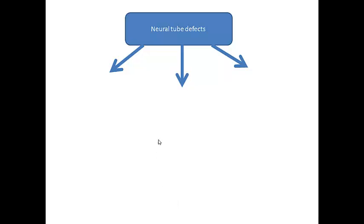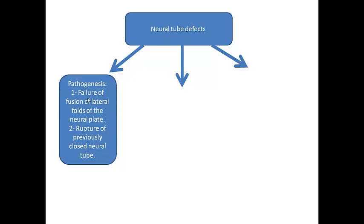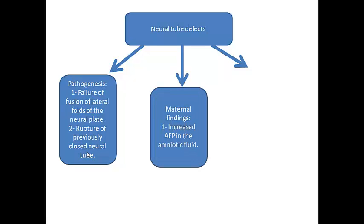What is the pathogenesis of neural tube defects? It could be either because of the failure of fusion of the lateral folds of the neural plate, or it could be because of the rupture of a previously closed neural tube. You can detect that a mother is carrying a baby with a neural tube defect by an increased maternal alpha-fetoprotein in the serum or in the amniotic fluid. Neural tube defects are highly associated with low folate levels prior to conception.